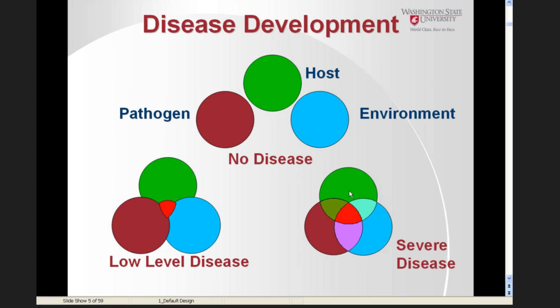Plant pathologists like to talk about a disease triangle. The components are the pathogen, the host, and the environment. Unless these three things come together at the same time — and by host we mean a susceptible host — you don't have disease developing. If these three factors come together briefly, you may have a low level of disease, but if they occur together continuously, disease could be quite severe.